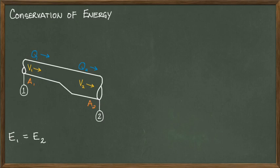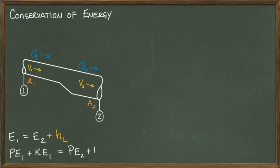Continuing with the assumption that water is flowing from 1 to 2, we need to account for the energy losses as H of L, and we add it to the residual energy that is left over at point 2. From your first physics class, you learned that energy has two parts: potential energy and kinetic energy. So we rewrite the generic equation to include both terms on each side and include the energy loss on the right side.